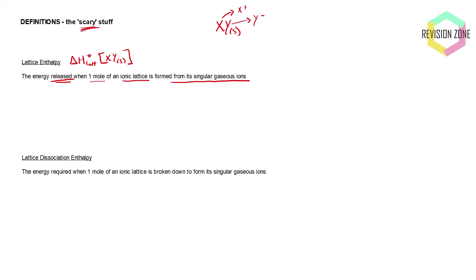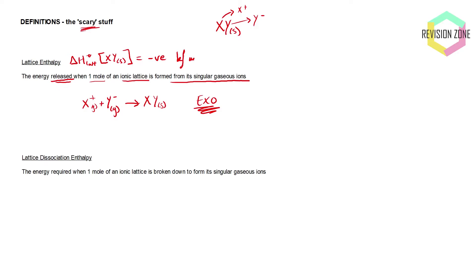We can use ΔH_lat to describe the lattice enthalpy, and I'm going to be using XY. So this will be the lattice enthalpy of XY solid. This is the energy released because the lattice formation enthalpy is always releasing energy — it's about bond forming. The attractions between positive and negative ions release energy. It is the energy released when one mole of an ionic lattice is formed from its singular gaseous ions. This value is always going to be negative kJ/mol — always exothermic.